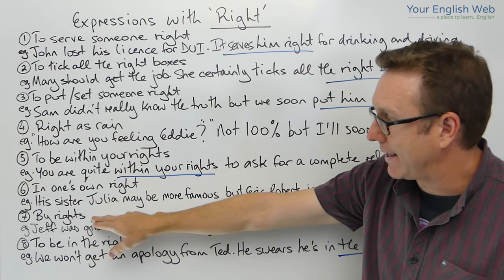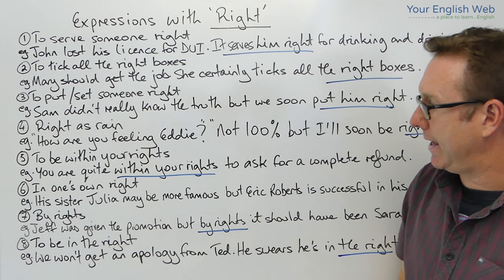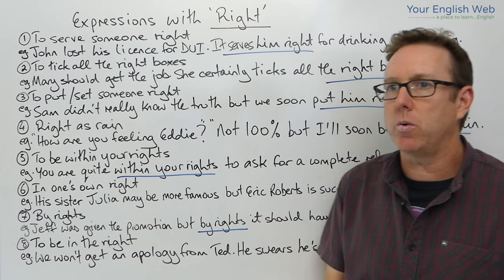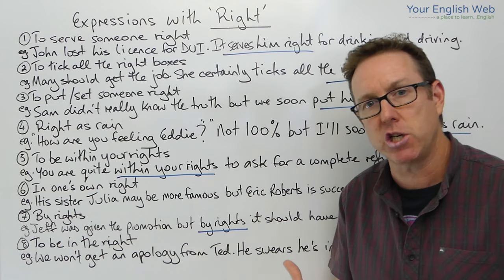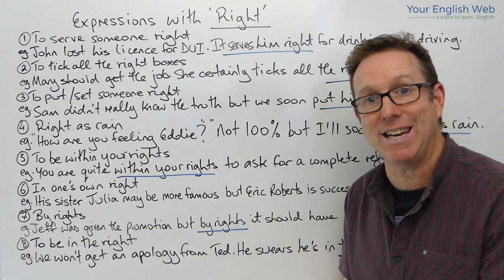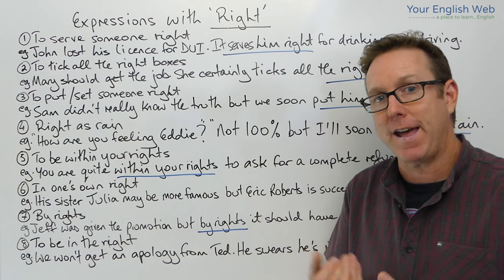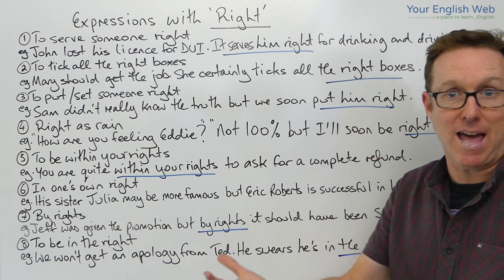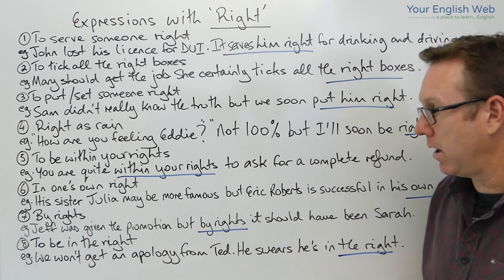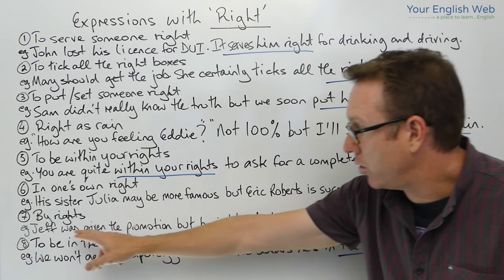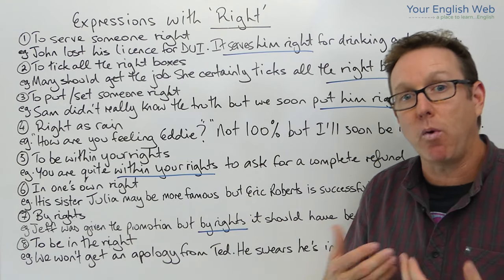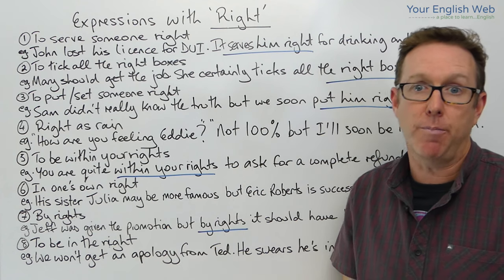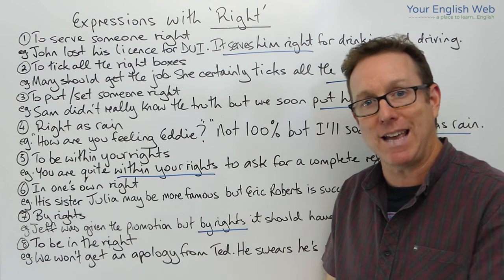The next expression is 'by rights'. Example: Jeff was given the promotion, but by rights it should have been Sarah. Sarah was in the best position to receive the promotion, and if everything had been fair and given to the person who deserved it most, it would have been Sarah. By rights, she should have had the promotion, not Jeff.